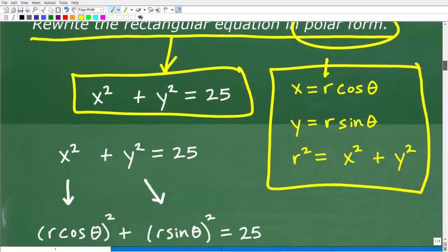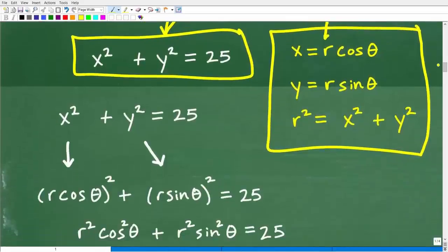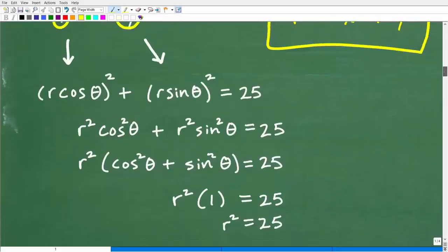Okay. So if you understand that, then this is basically just a bunch of algebra. So what we're going to do is we're going to replace the x and the y here with r cosine theta and r sine theta. So let's go ahead and do that right now.